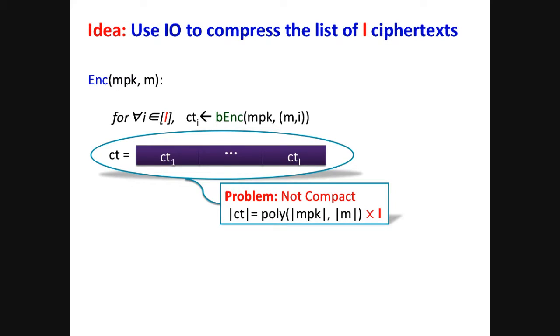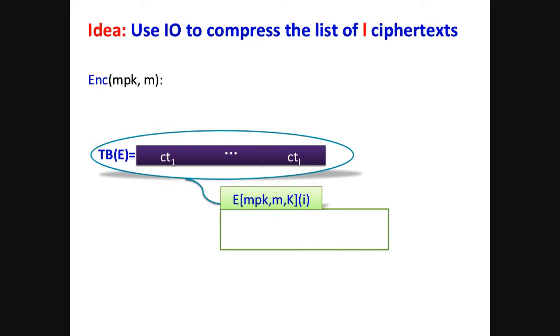And with this list of ciphertexts at decryption time, we can evaluate the secret key for the Boolean circuit B on every ciphertext and producing every bit in the output. Great. It's easy to see that semantic security of this scheme follows from the semantic security of the Boolean scheme, with the only problem that this scheme is not compact. In particular, the size of the ciphertext scales linearly with the number of output bits, but it really should be independent of any parameter of the circuit C. So the idea to get around is to use IO to compress this list of ciphertexts.